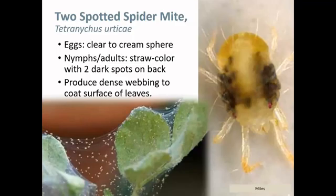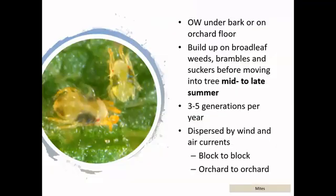Two-spotted spider mite eggs are clear to cream colored, while nymphs and adults are a straw color with two very distinct dark spots on their back. True to their name, they produce a dense webbing along the leaves, very similar to spider silk. Two-spotted spider mite overwinters under bark or on the orchard floor, so populations actually build up on weeds on the orchard floor before coming up into the tree. Populations usually aren't observed until mid to late summer, after which there are multiple overlapping generations, and these populations can be dispersed easily throughout the orchard through wind currents.